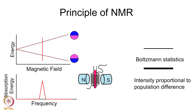Summarizing the principle of NMR: in the absence of a magnetic field, the nuclear spins for I equal to one-half have the same energy for both orientations. When a magnetic field is applied, the two energy levels become non-degenerate, and their separation depends on the magnetic field strength. The spins are distributed between the two states according to Boltzmann statistics, and the energy absorbed depends on the excess population difference between the two levels.